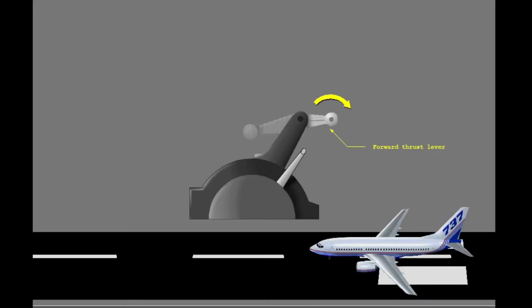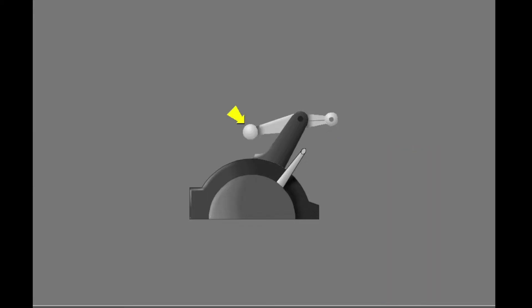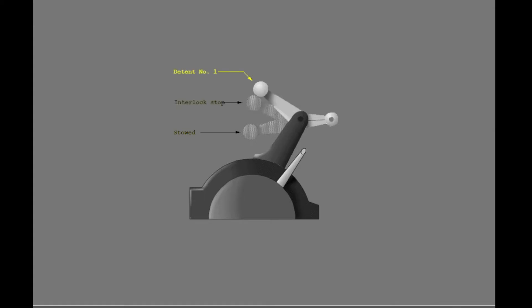To use the thrust reversers, the airplane must be on the ground with the forward thrust levers at idle. The reverse thrust levers are on the control stand. Each reverse thrust lever has five positions: stowed, interlock stop, and three positions of reverse — detent one, detent two, and maximum reverse.